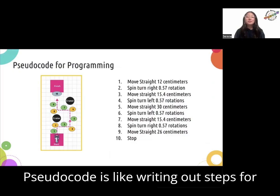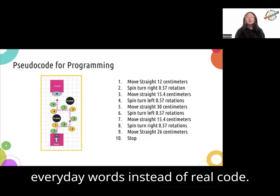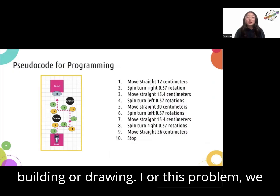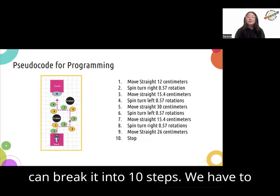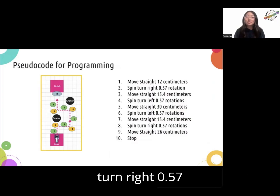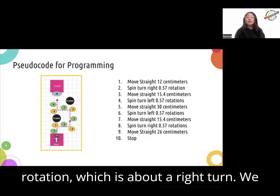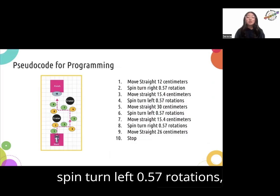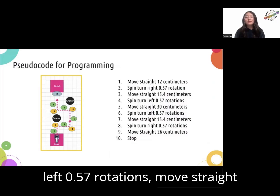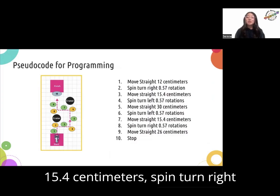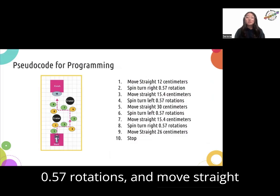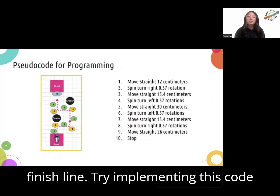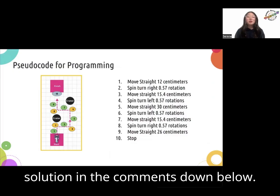Pseudocode is like writing out steps for a robot to follow, but using simple everyday words instead of real code — it's like making a plan before you start building. For this problem, we can break it into 10 steps: move straight 12 centimeters, spin turn right 0.57 rotations (about a quarter turn right), move straight 15.4 centimeters, spin turn left 0.57 rotations, move straight 30 centimeters, spin turn left 0.57 rotations, move straight 15.4 centimeters, spin turn right 0.57 rotations, and move straight 26 centimeters to stop at the finish line. Try implementing this code for your Spike Prime robot and leave your solution in the comments below.